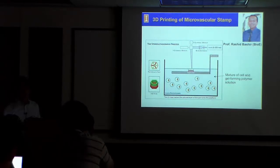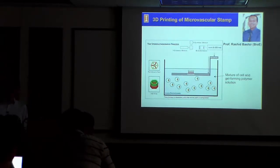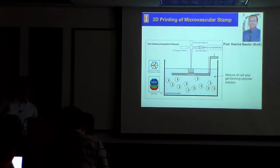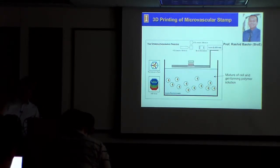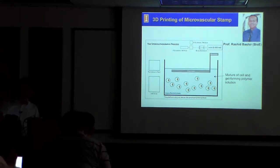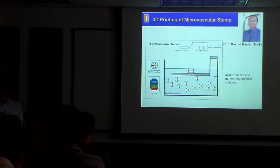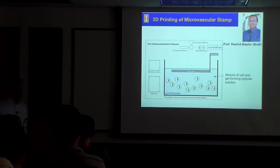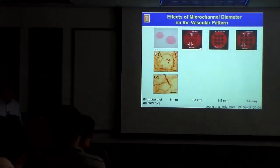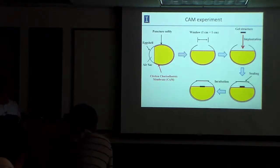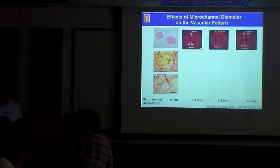The laser initiates the cross-linking reaction. We spent considerable time optimizing laser intensity and initiator concentration to control the resolution of each spot that cross-links to form the gel. We changed the microchannel diameter from 0 to 300 to 500 to 1,000 micrometers, then implanted the constructs on a chicken embryo membrane and examined vasculature formed over seven days of incubation.